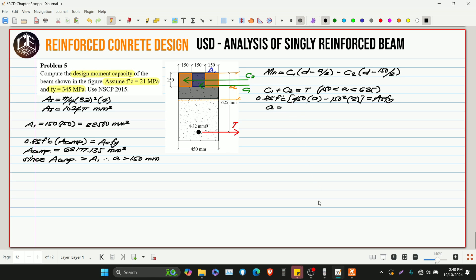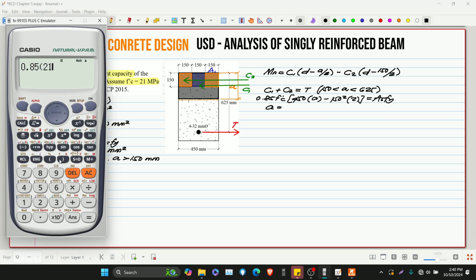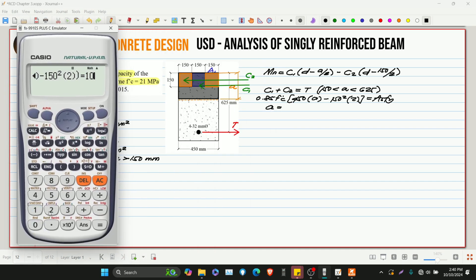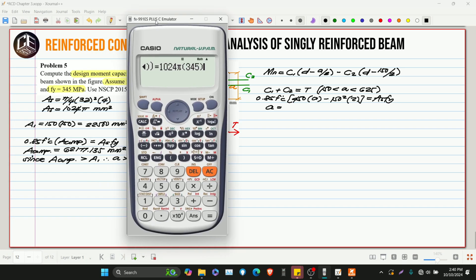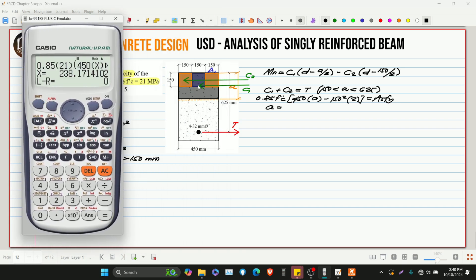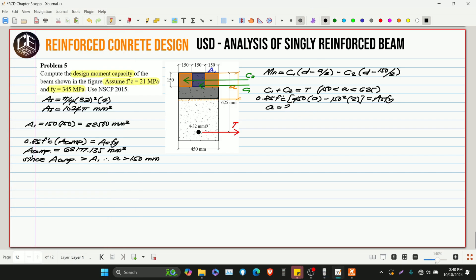So, what is A? 450A minus 150 squared multiplied by 2 is equivalent to AS. Our AS is 1024 pi multiplied by FY 345. So this is 238.17. So, we're okay with A because we're greater than 150 millimeters.